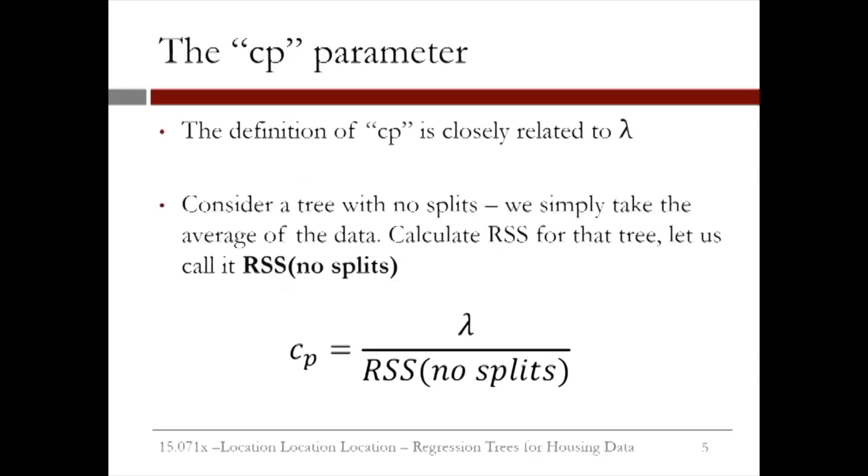You may be wondering at this point, the definition of CP is what exactly? Well, it's very closely related to lambda. Considering a tree with no splits, we simply take the average of the data, calculate RSS for that so-called tree, and let us call that RSS for no splits. Then, we can define CP as lambda over RSS for no splits.